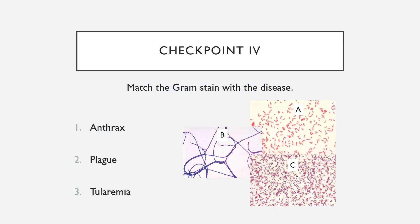In checkpoint four, you are given three images of gram stains and asked to match each gram stain with the disease it indicates — anthrax, plague, or tularemia.